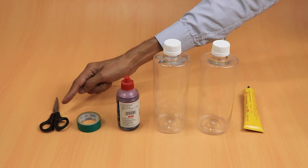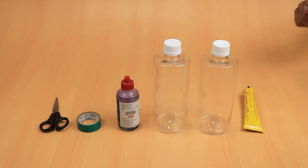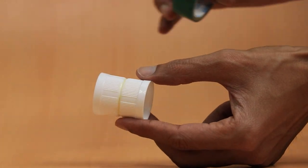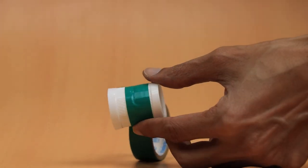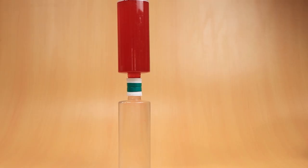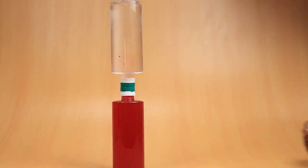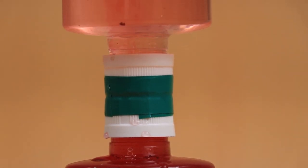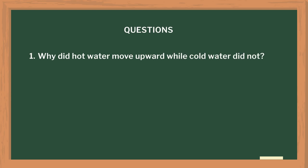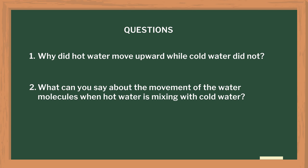Later, I elaborated the convection of heat through the next activity. I used a pair of scissors, a cello tape, ink, two transparent bottles, and gum. Using the tip of a scissor, make holes of the same size in the caps. Align the two holes and glue the caps together. Secure the caps further with the tape. Add a few drops of ink in the hot water — the color is being mixed in the water. Now, keep the cold water bottle above the hot water bottle. We can see the hot colored water is rising up. Try this activity the other way round and note down the observations. After this activity, I asked few questions: Why did hot water move upward while cold water did not? What can you say about the movement of the water molecules when hot water is mixing with cold?